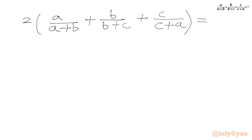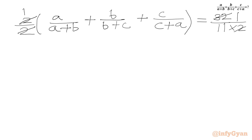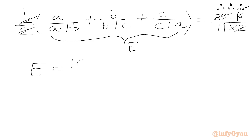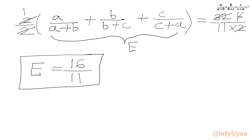On the RHS we have 3 plus (minus 1/11), which is 32/11. Dividing both sides by 2, we get E equal to 16/11. So our final answer is e = 16/11. I hope you liked this video. Thank you very much for watching — don't forget to like, share, and subscribe. Bye-bye, good luck, take care!